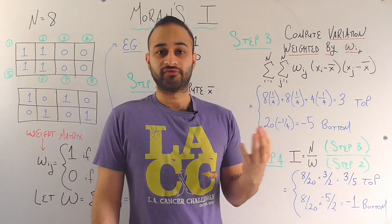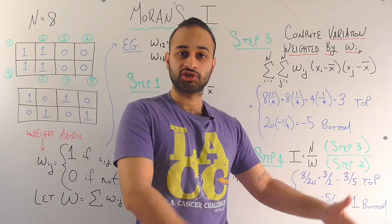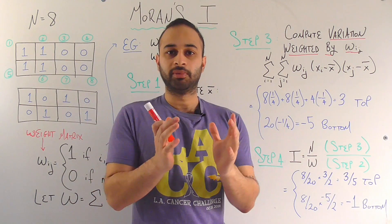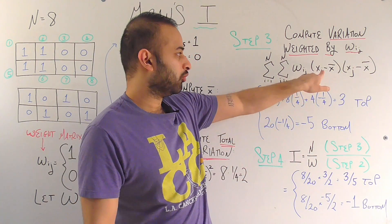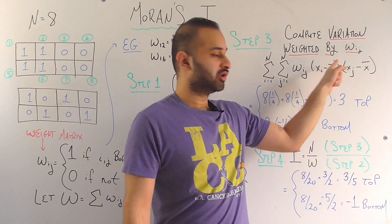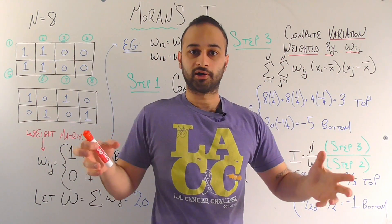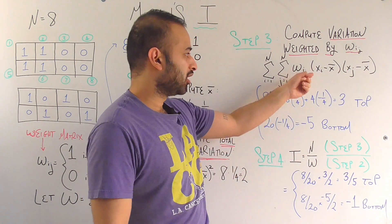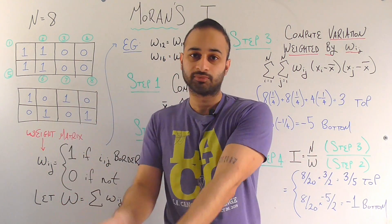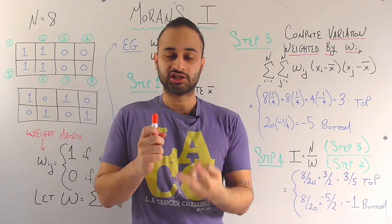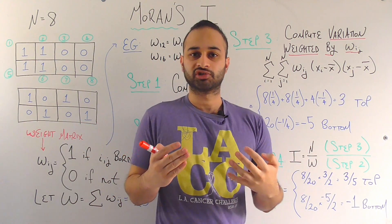Step 3 is the most interesting part — what makes this truly a spatial correlation. We sum over every i,j pair and compute w_ij times (X_i minus X-bar) times (X_j minus X-bar). The product (X_i minus X-bar)(X_j minus X-bar) is similar to a covariance calculation, measuring whether states i and j's deviations from the mean are in similar or opposite directions. For example, if state i is Democrat and j is Republican, we get positive one-half times negative one-half, giving negative one-fourth — they're on opposite sides of the mean, so they're not similar.